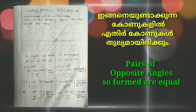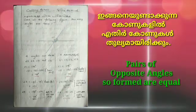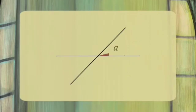Pairs of opposite angles are equal to pairs of opposite angles. If you want to write two intersecting lines, you can cross them.